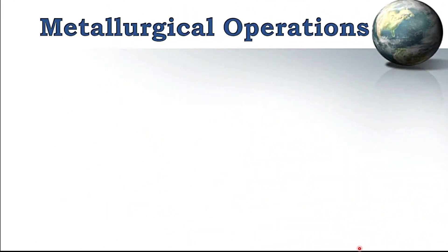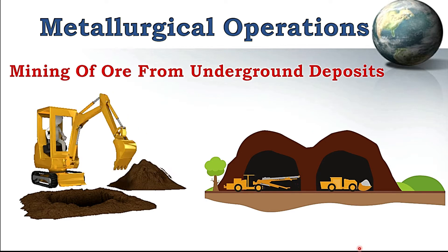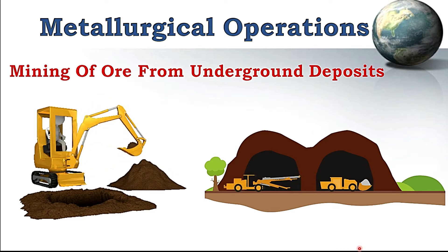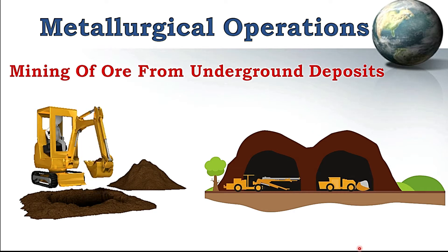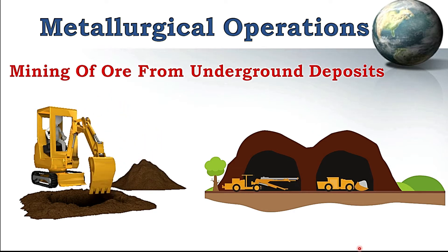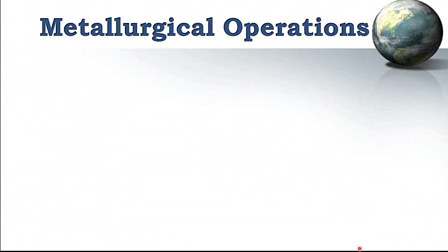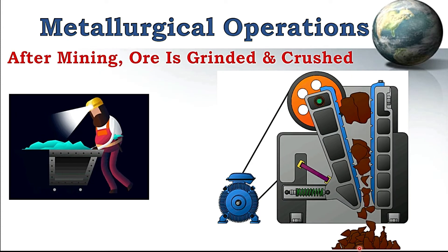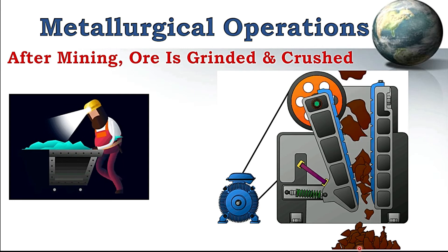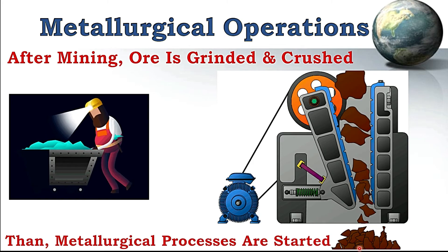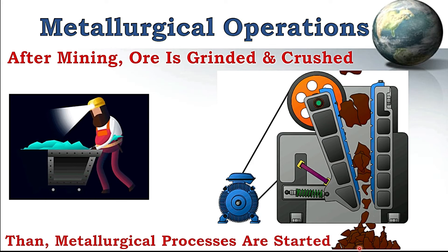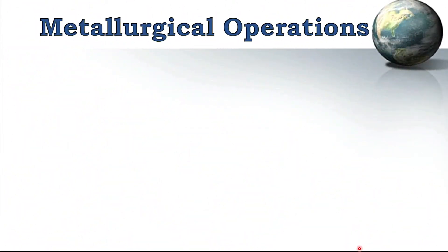Now we will discuss what metallurgical operations are performed in any metallurgy industry. First of all, mining of ore from underground deposits is performed, so ores can be taken out from the earth's surface. After collection of ore, it is ground and crushed in a crusher, then brought to the metallurgical industry where metallurgical processes are started to obtain pure metal.